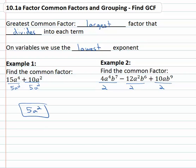They also all have some variables in common. They all have at least one a. In fact, using the lowest exponent there's only one a on the third term, so one a is all they have in common.